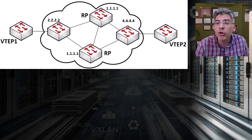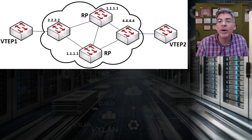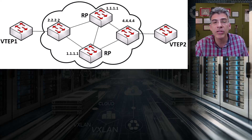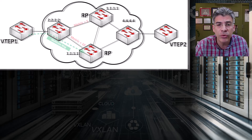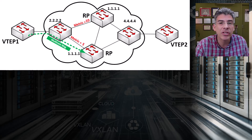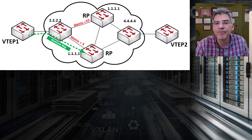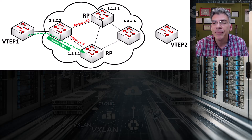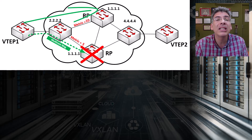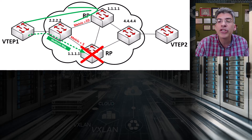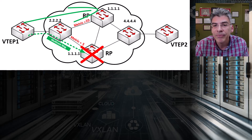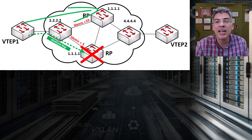These RPs are typically spread across different locations within the network. When a multicast source sends its data to the Anycast RP address, the underlying routing protocol — such as EIGRP or OSPF, or whatever else is used — will direct the traffic to the nearest RP. Nearest simply means the RP that has the smallest distance or routing protocol metric to the source. Similarly, multicast receivers also join the multicast group via the nearest RP. If one RP fails, the routing protocol dynamically redirects the traffic to the other operational RP almost instantaneously, ensuring continuous availability and improved reliability.